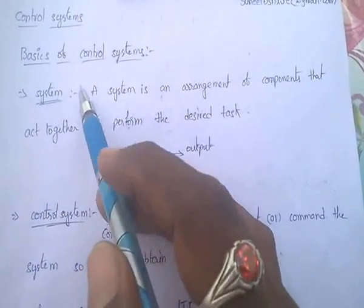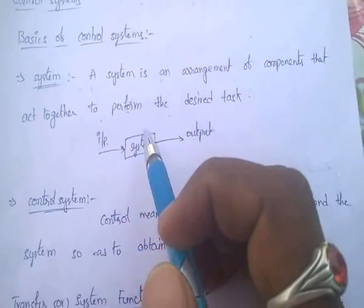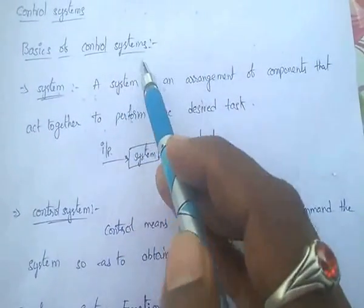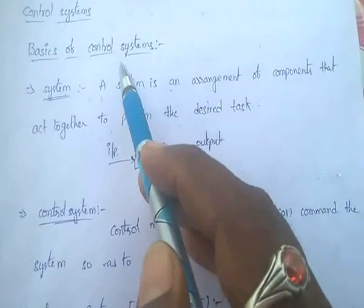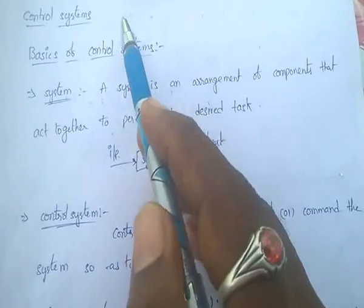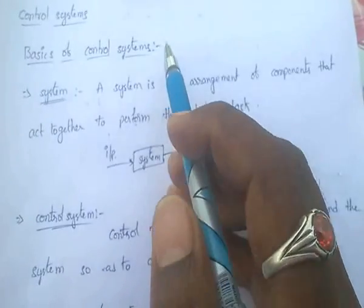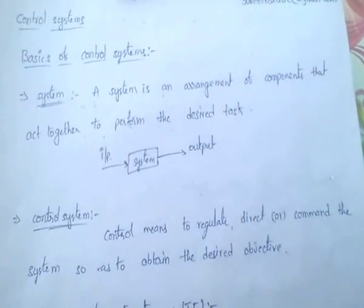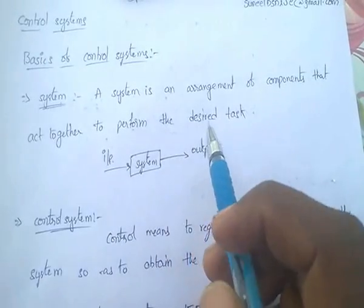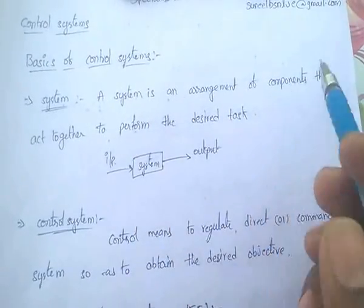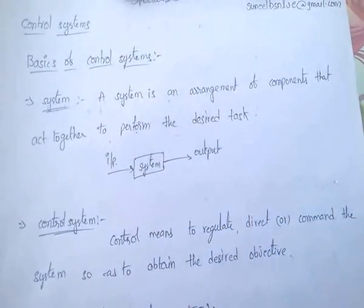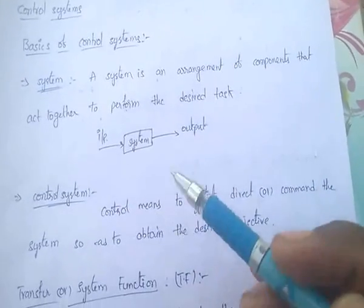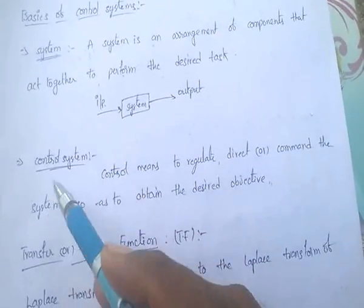First of all, basics of control systems. What is a system? A system is an arrangement of components that act together to perform a desired task.